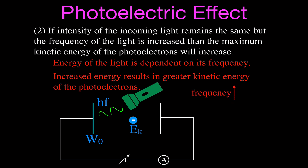The frequency and the energy are directly related. This is the equation used for photoelectric effect problems: the energy of the incoming light minus the work function equals the kinetic energy given to the photoelectrons. The work function is essentially a constant for each metal, so if we increase the incoming energy by increasing frequency, there will be more and more energy left over as kinetic energy for our photoelectrons.